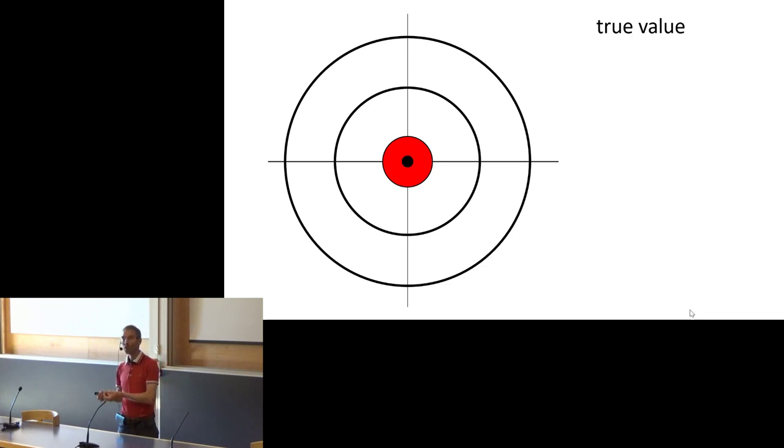We do not always have the luxury of knowing the true value, otherwise you wouldn't measure it, but somewhere that true value exists. Then you do a measurement, and that measurement gives you a data point that is close or not close to the true value.